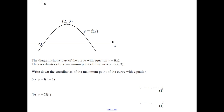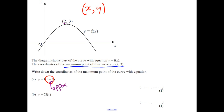Another question — we've got a curve y equals f(x), not telling us the equation. The coordinates of the maximum point are (2, 3). Write down the coordinates of the maximum point of the curve y equals f(x − 2). It's x minus 2, so we're doing it to x and we do the opposite — we take the opposite of minus 2 and plus 2 on to the x value. So we get (4, 3). Next part, 2f(x) — it's to y, so you do the same thing: times it by 2, giving (2, 6).